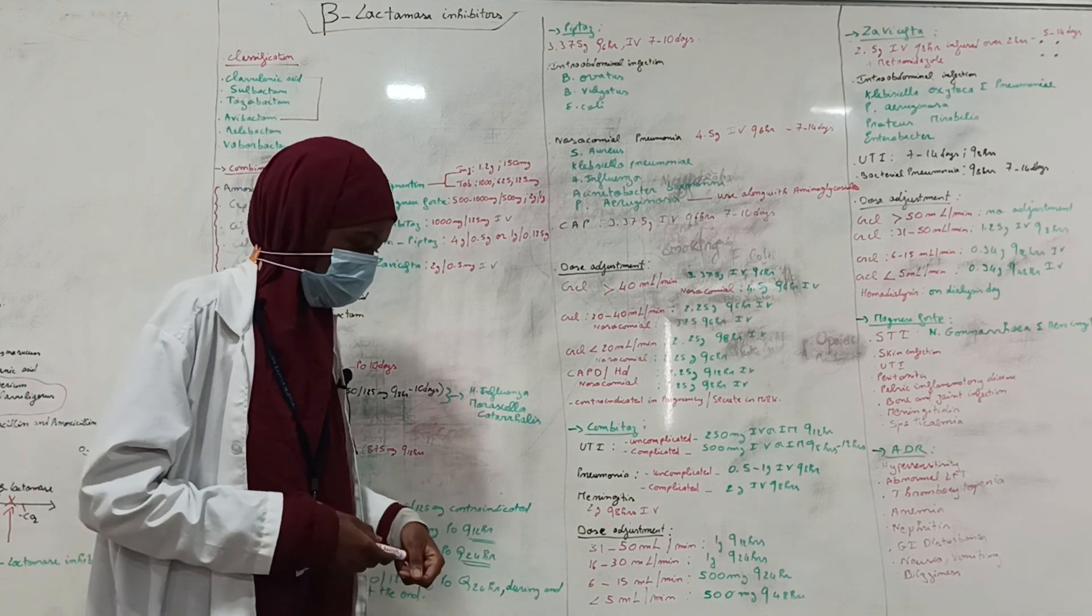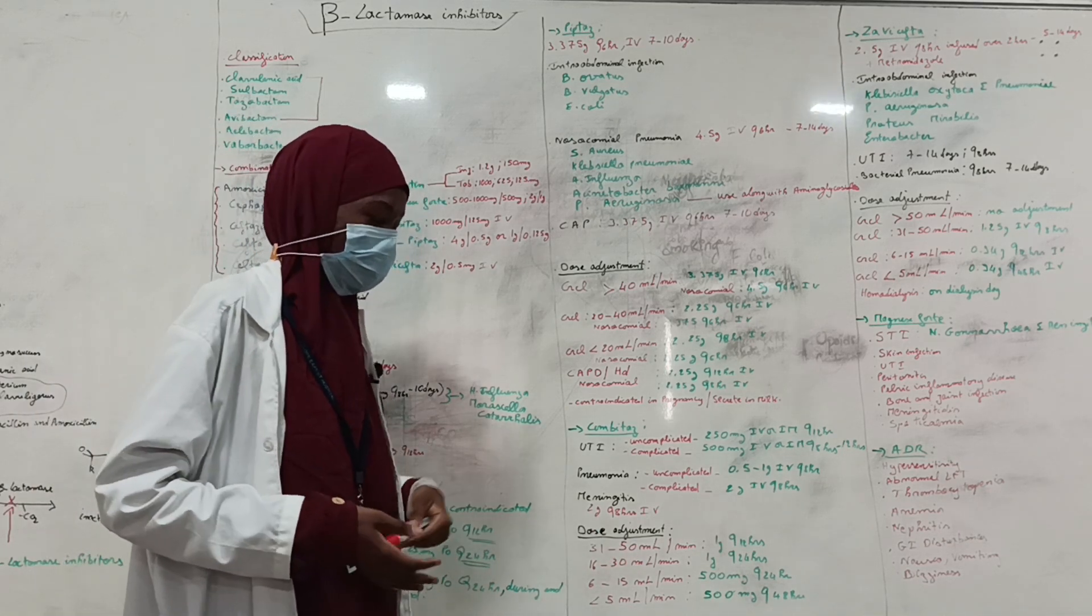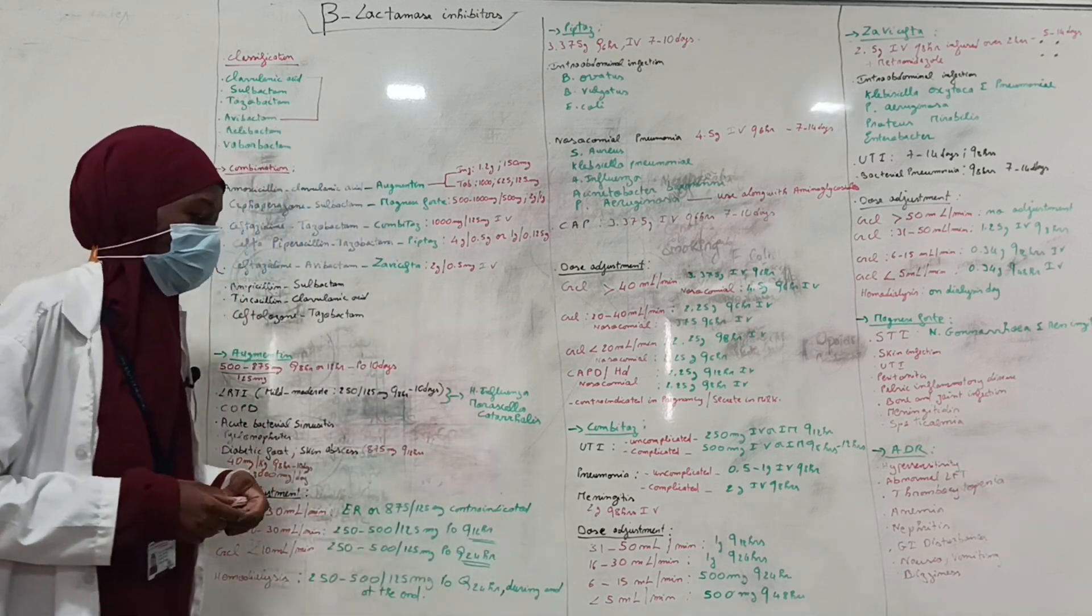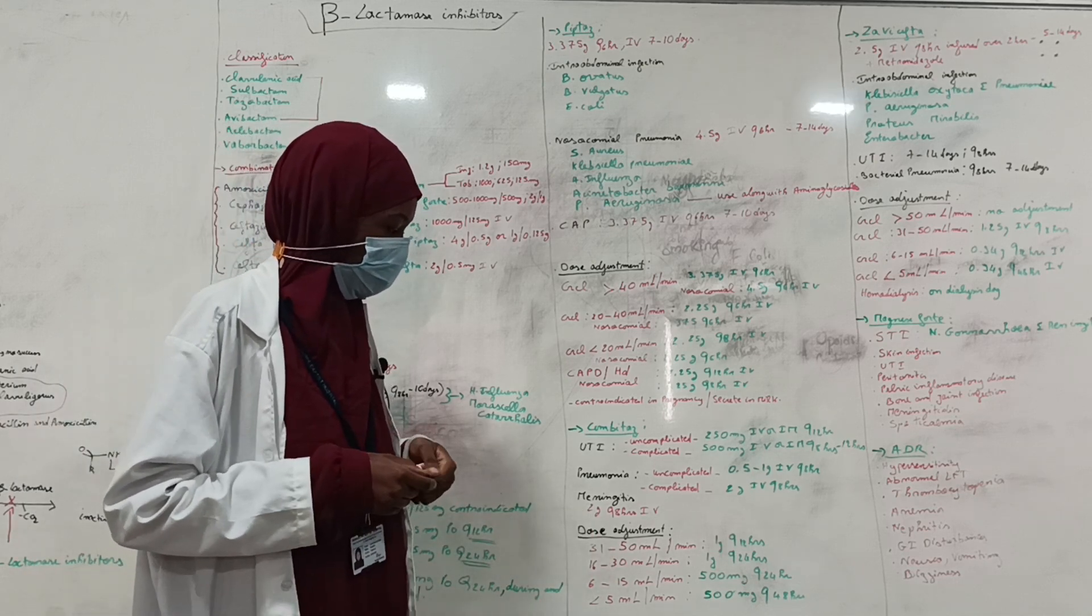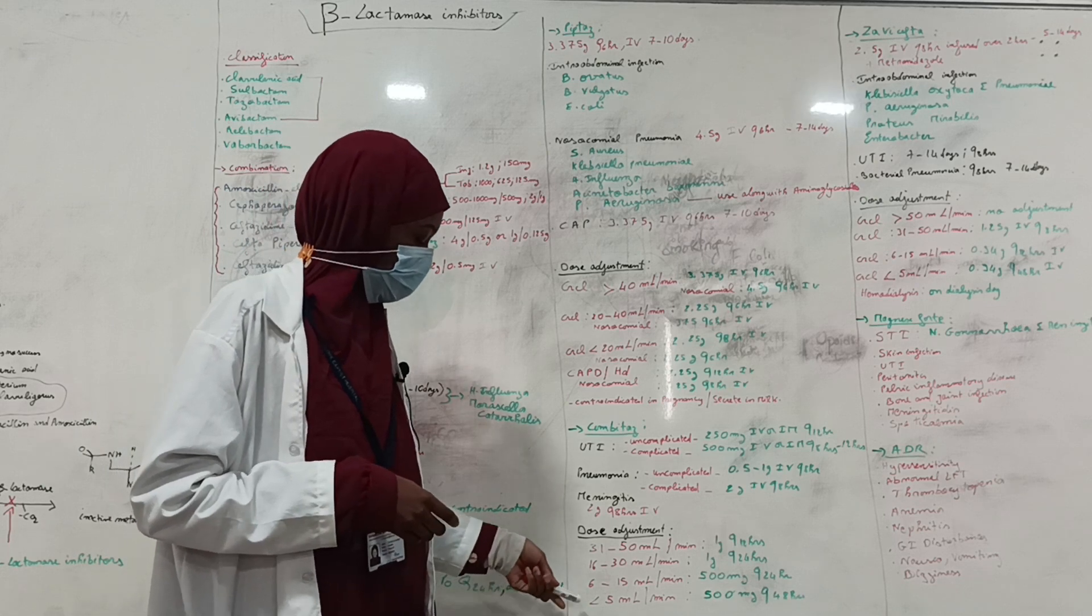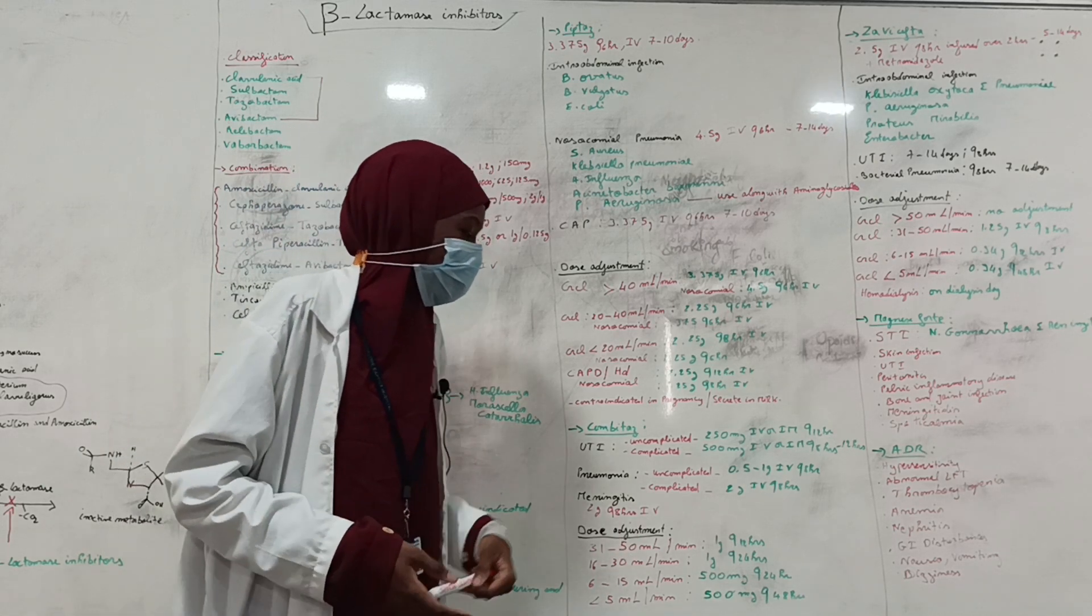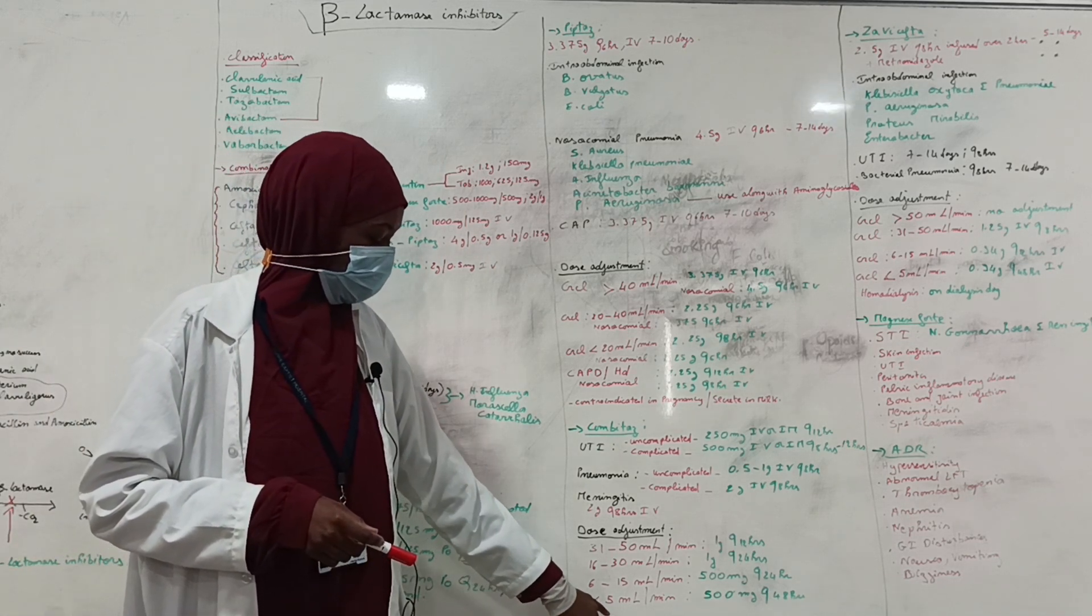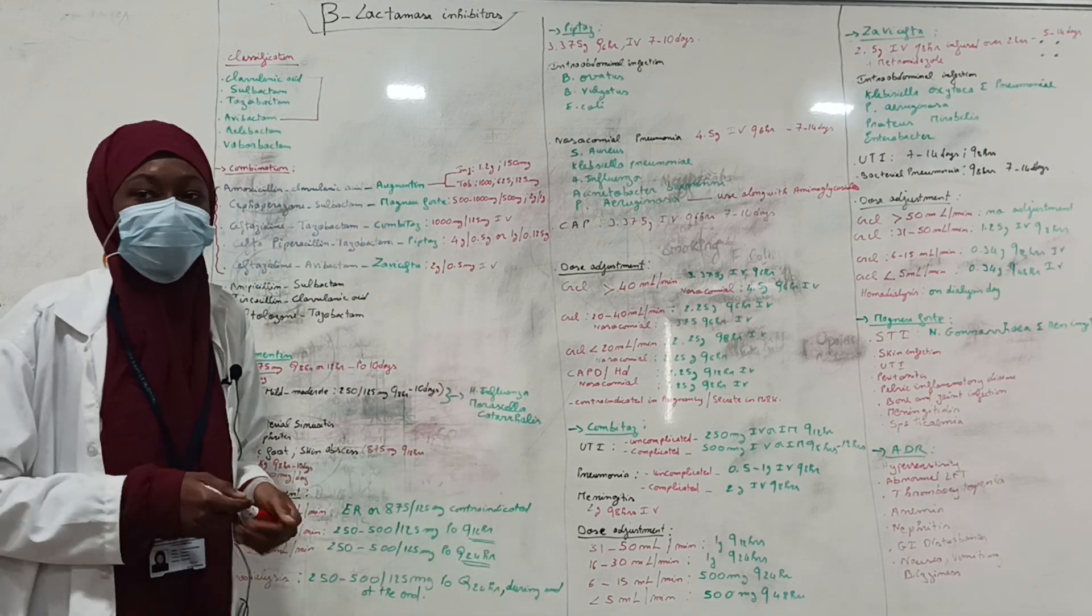When it comes to dose adjustment, for creatinine clearance between 31 to 50 ml per minute, 1 g every 12 hours. For creatinine clearance between 16 to 30 ml, 1 g every 24 hours. For creatinine clearance between 6 to 15 ml per minute, 500 mg every 24 hours. If creatinine clearance is less than 5 ml, 500 mg every 48 hours is recommended.